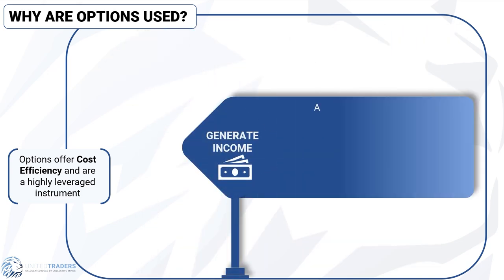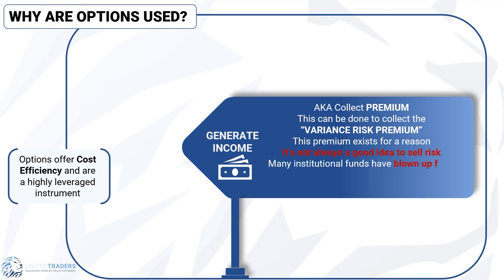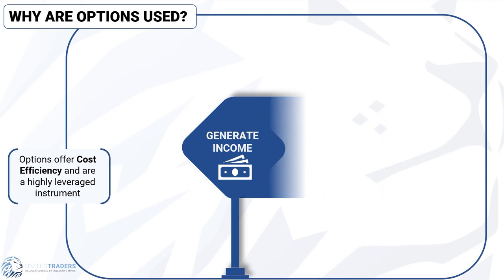This is why the return on investment is better and risk is lower than buying the shares. Selling options is a way to generate income, also known as collecting premium, and can be done to collect the variance risk premium. However, the market is efficient, so this premium exists for a reason — it is not always a good idea to sell risk. Many institutional funds have blown up from selling options, while no major fund has blown up from buying options.